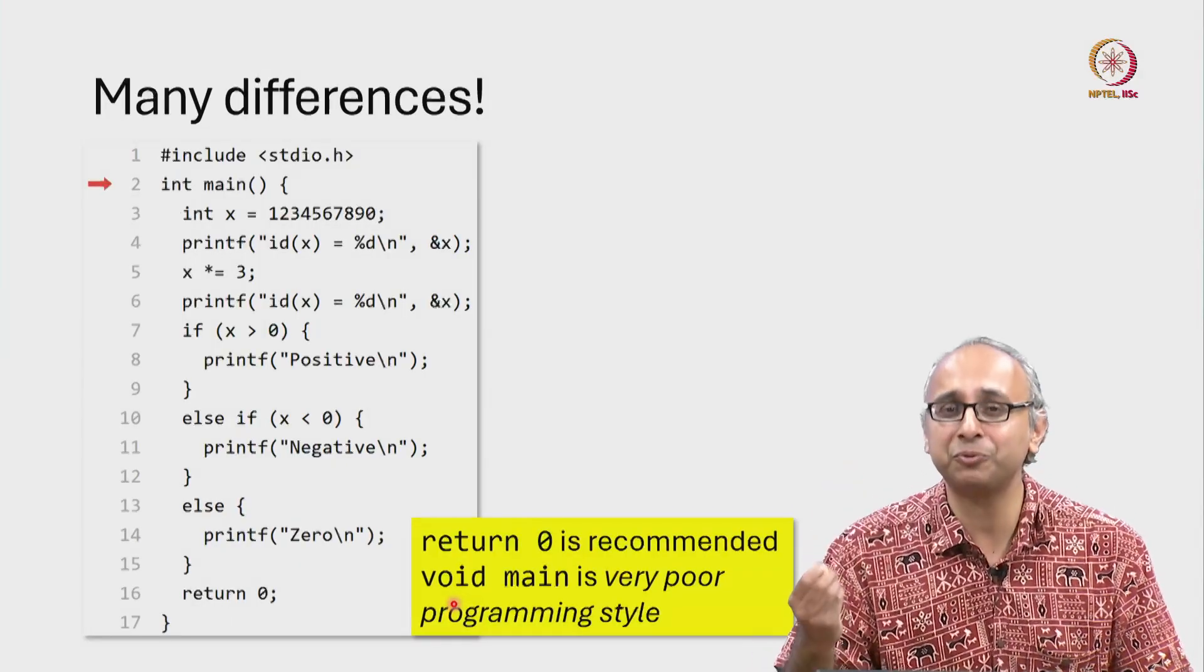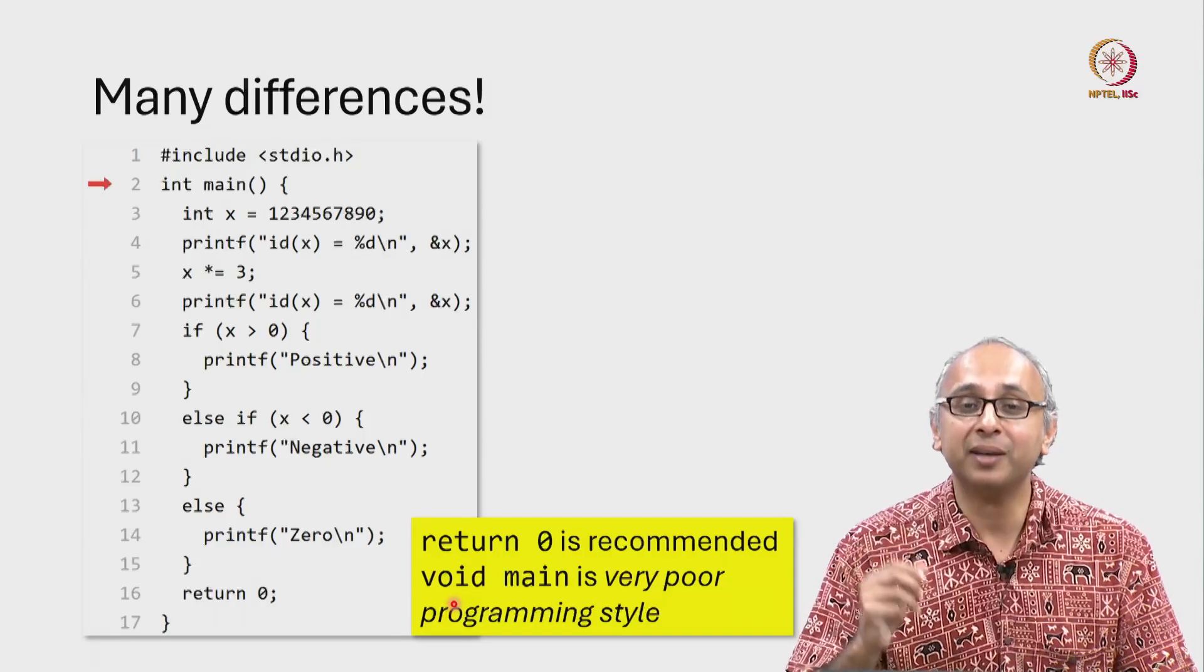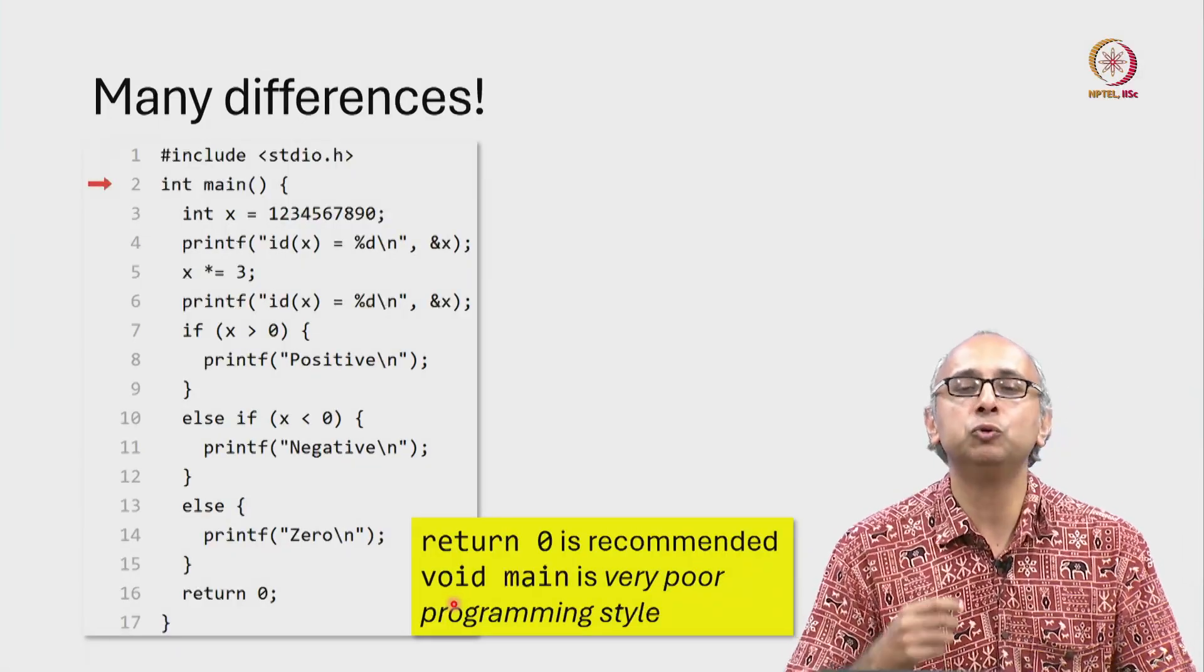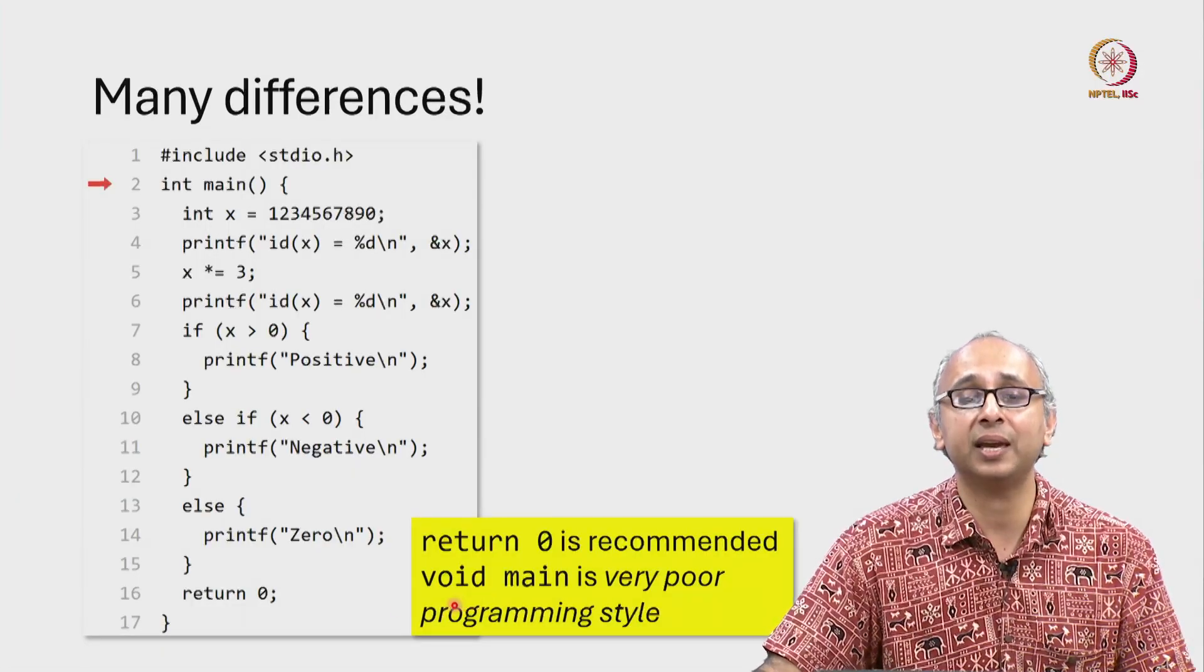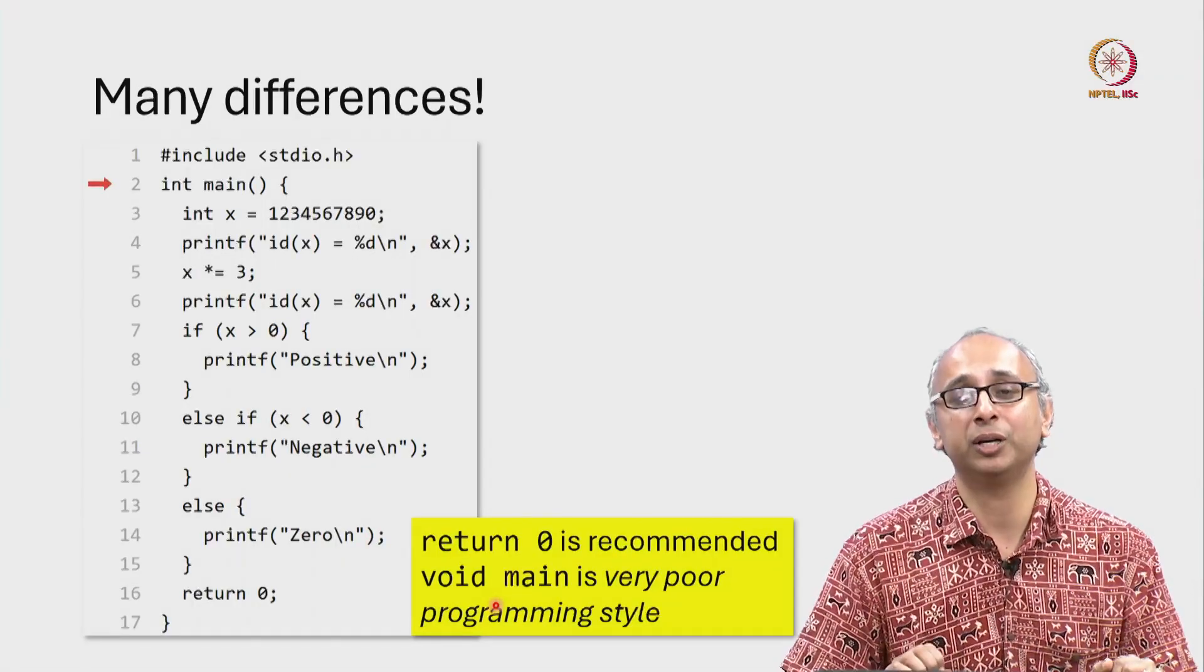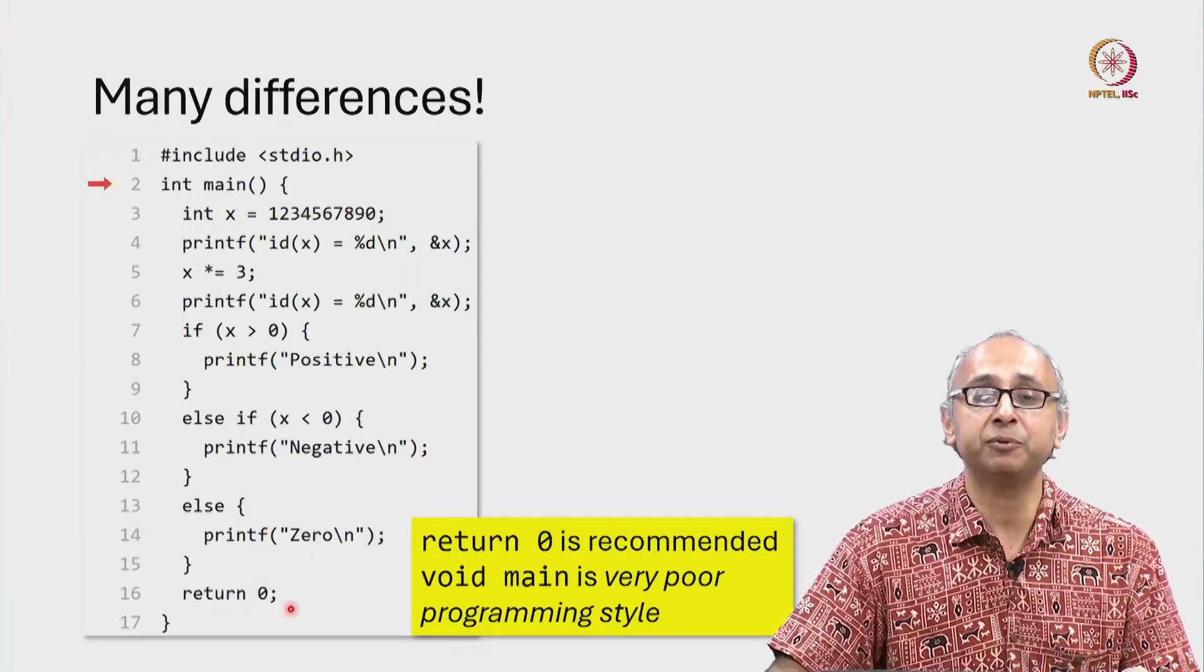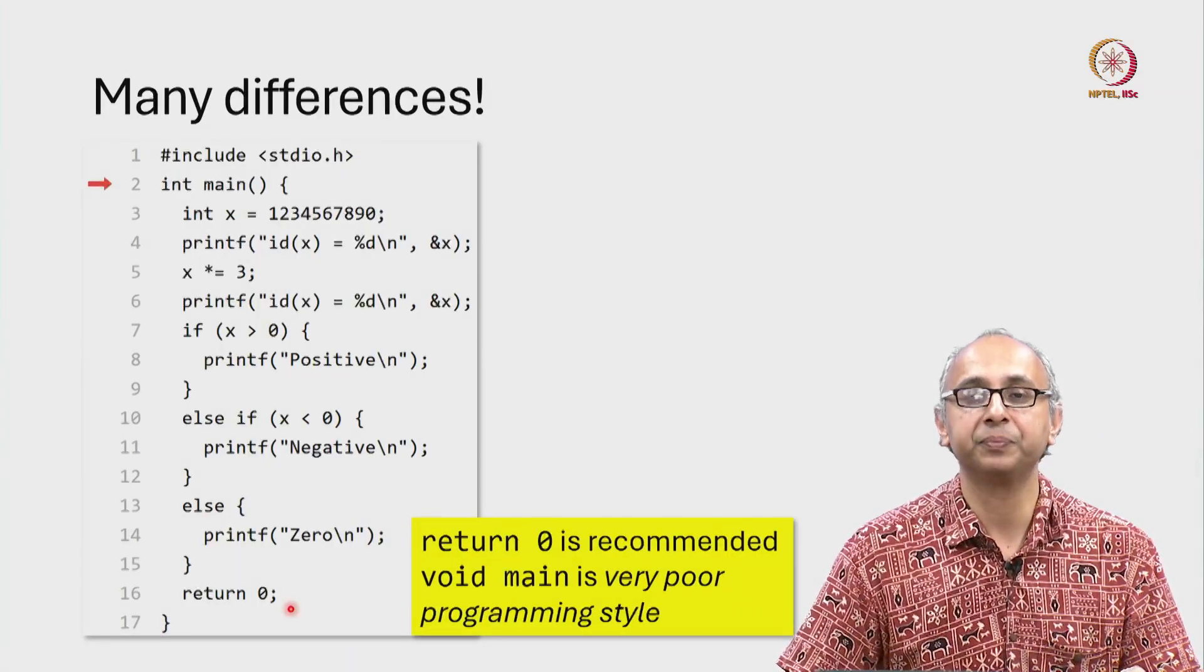Every Python function must return some object. If you don't write a return statement, that Python function will return a special object none, but it must return a single object every time. But in C, you can write a function that doesn't return anything at all, and some textbooks and other teaching resources say you should write void main. Please don't do that. That is very poor programming style. A C program should be written this way where it has an integer return value, and by convention, that return value should be a 0 to indicate that there were no errors in executing that particular C program.